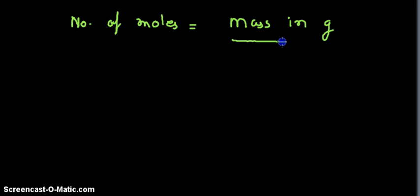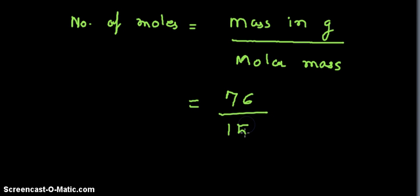Now we shall find the number of moles. Number of moles is equal to mass in grams divided by the molar mass. Now we have mass in grams, which is given as 76, and we also have molar mass, which we have just found out, 152. So the number of moles are 0.5.